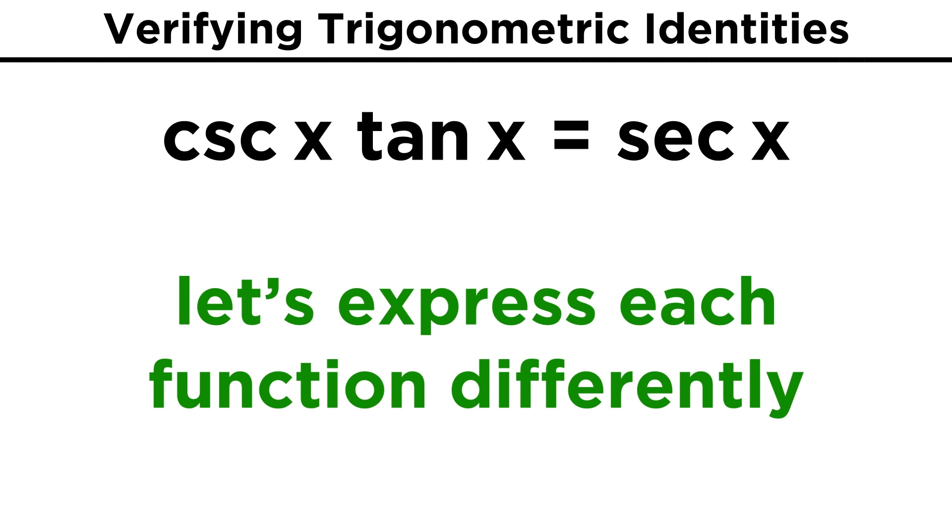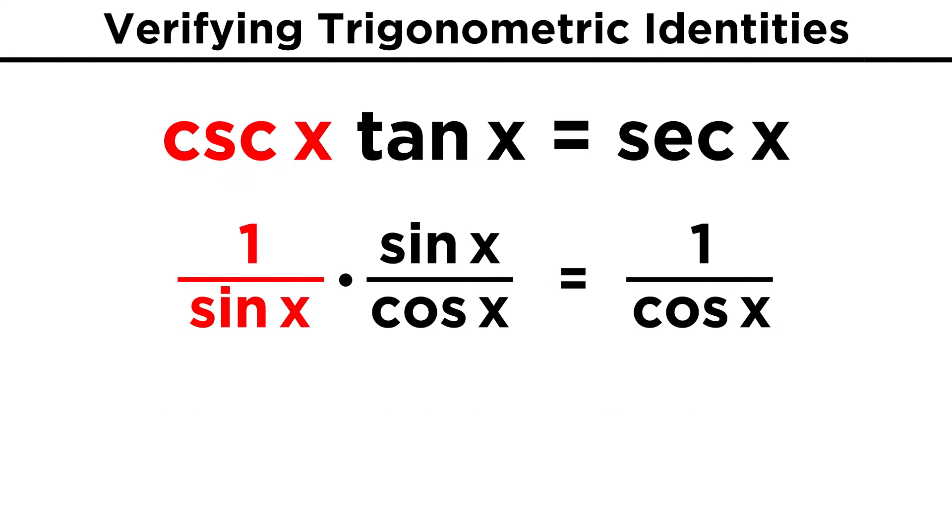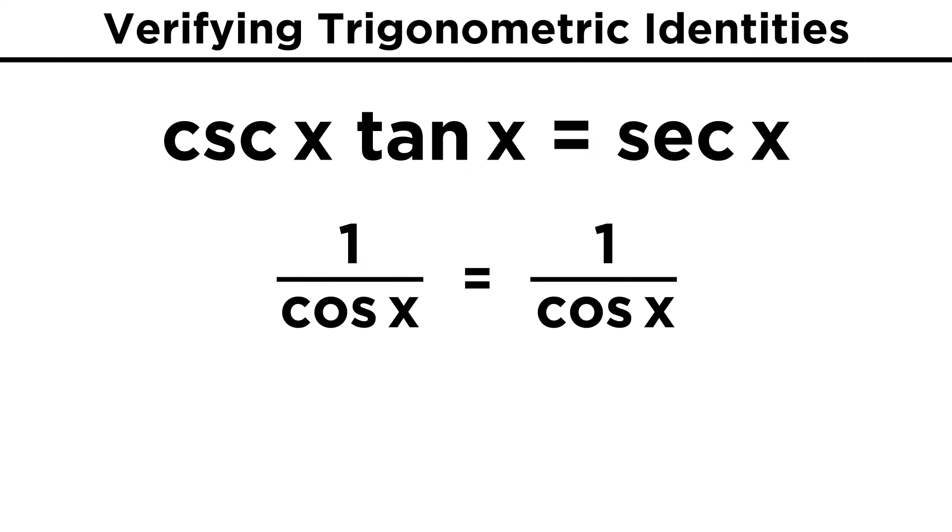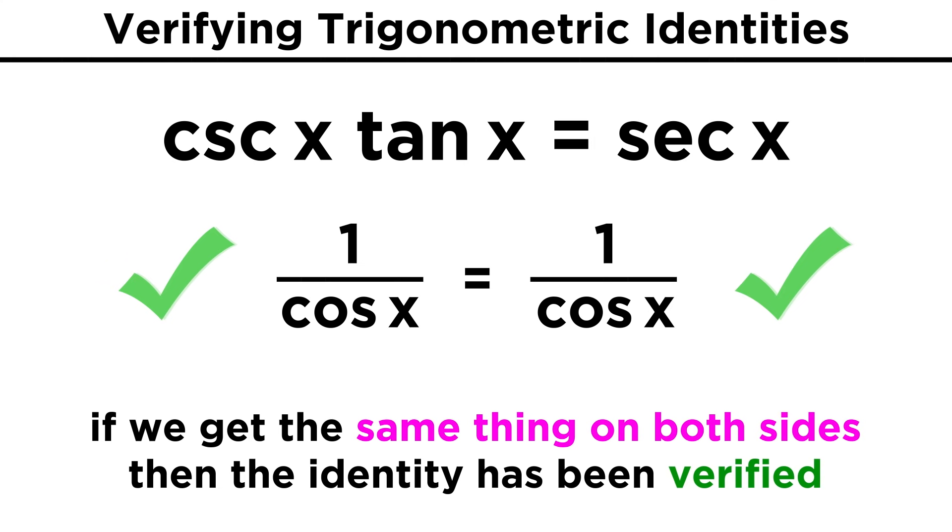All we have to do is start rewriting things in ways that we know are true. For example, cosecant x is one over sine x, tangent x is sine x over cosine x, and secant x is one over cosine x. Now on the left side, we notice that the two sine x terms cancel, and we are left with one over cosine x. That's what is on the right side as well, so the identity has been verified.